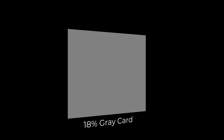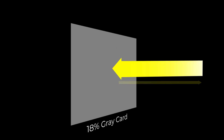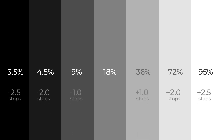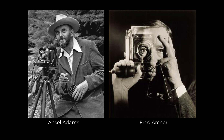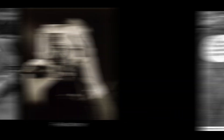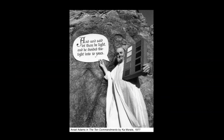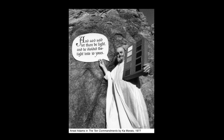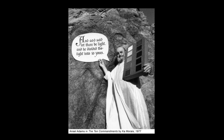The 18% meant it reflected 18% of the light that hits it. If you think about printing in terms of stops, 18% is the geometric mean between white paper — which is 95% reflectance — and black ink, which is 3.5% reflectance. When Ansel Adams and Fred Archer published The Zone System in 1941, they used this 18% gray card that printers use as a reference for middle gray, or Zone 5.